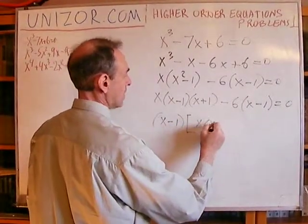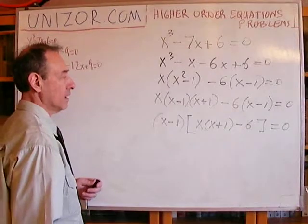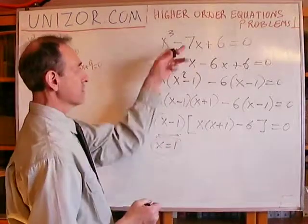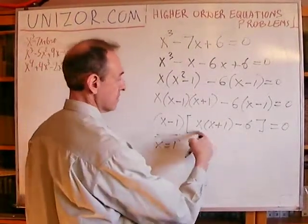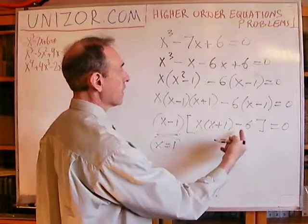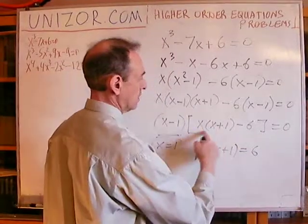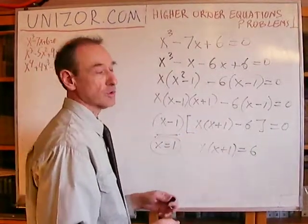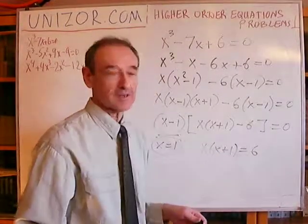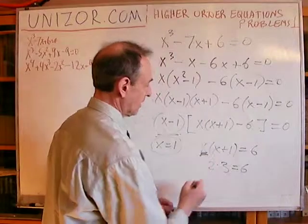I see that x minus 1 can be factored out from both places, leaving x(x plus 1) minus 6 equals 0. So obviously I see there is a solution: x equals 1 of this original equation. Now, if this factor equals 1, the other factor also equals 1. So solutions to this equation include x times (x plus 1) equals 6.